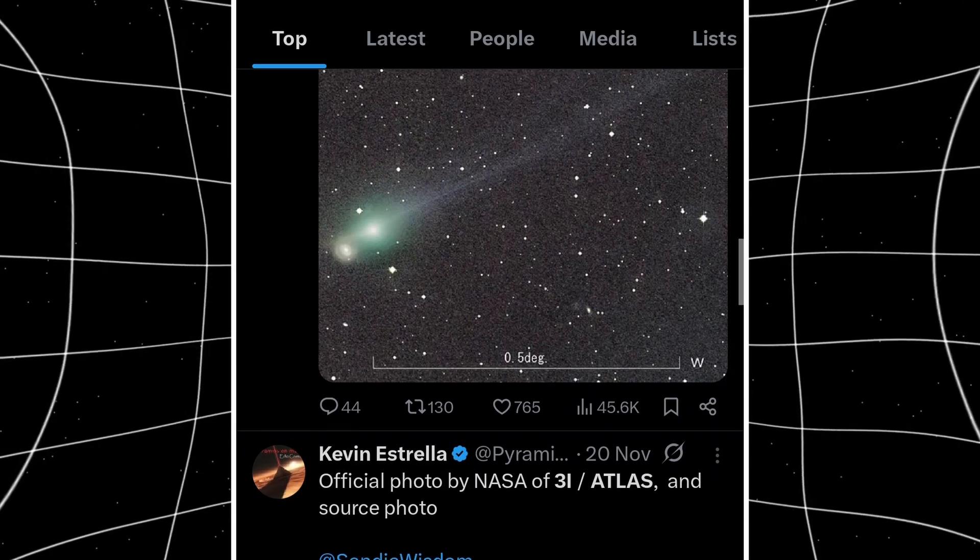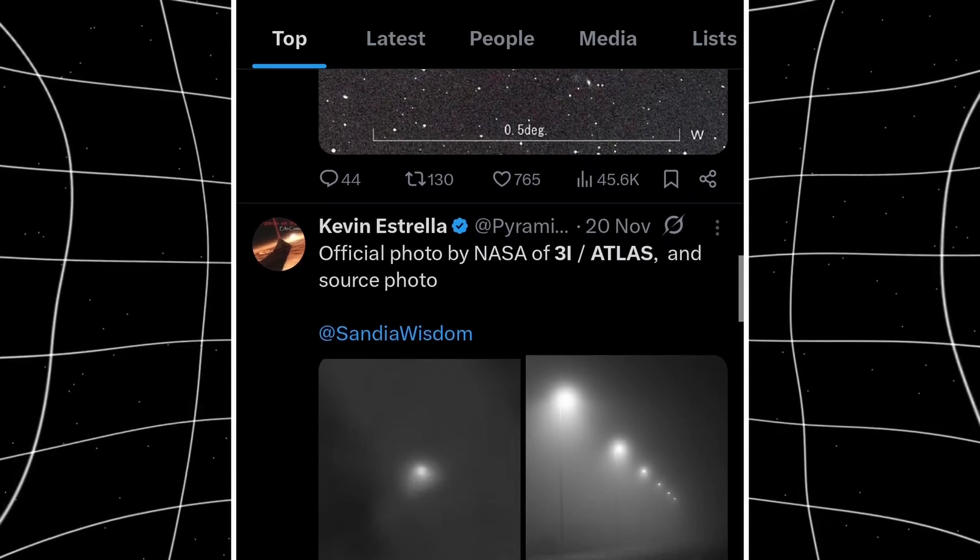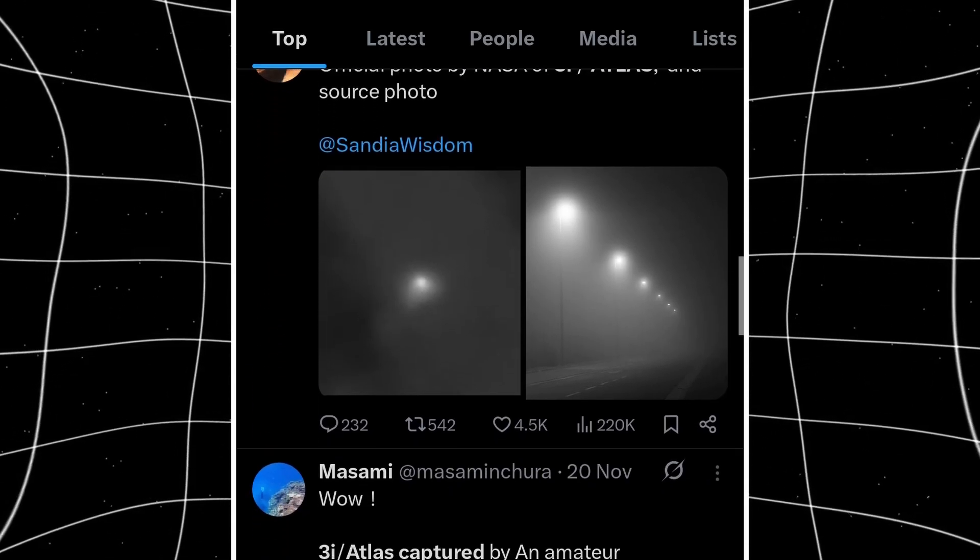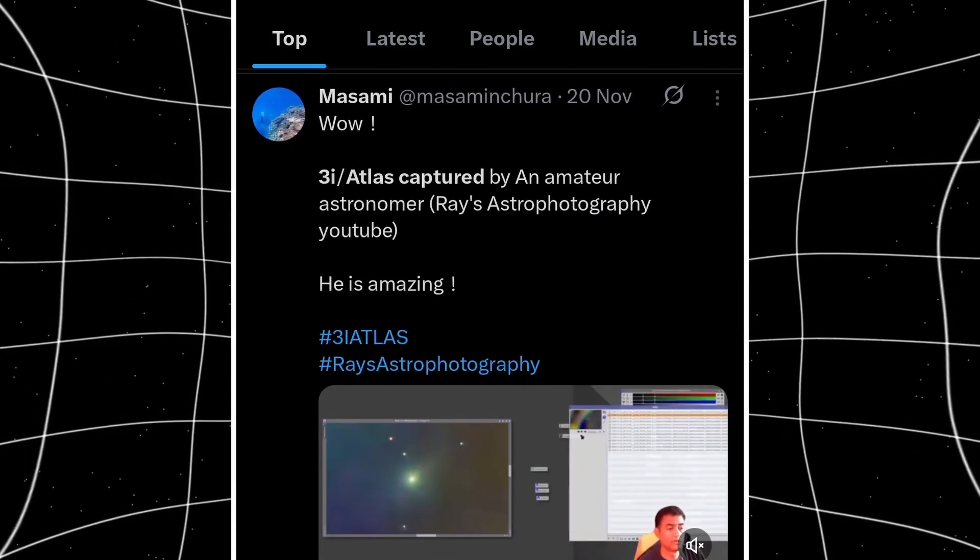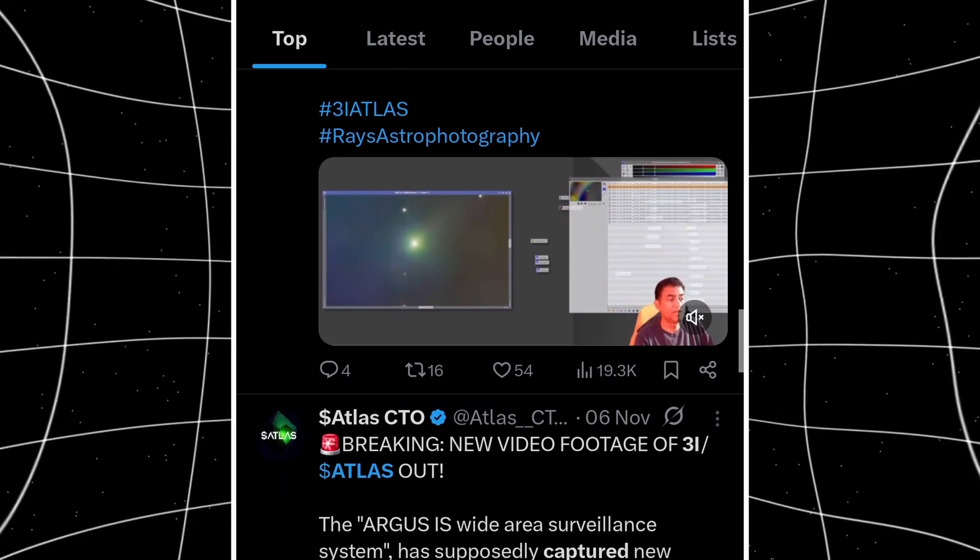You can't prove it's artificial. But you also can't ignore the fact that if you wanted to design a propulsion system that mimicked natural cometary activity perfectly, this is what it would look like.